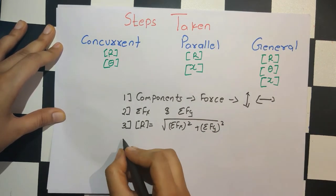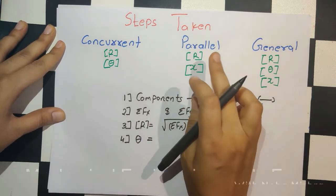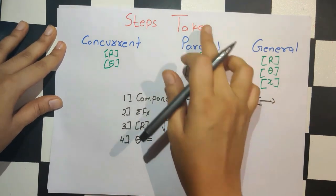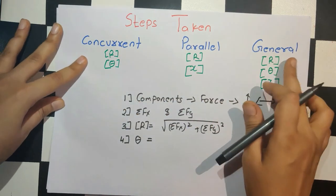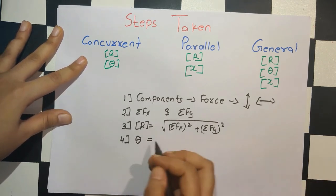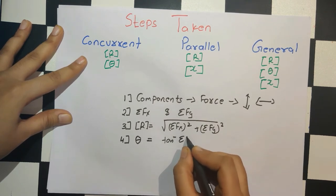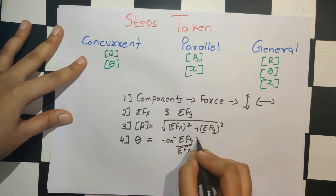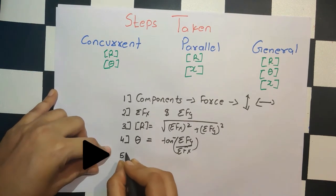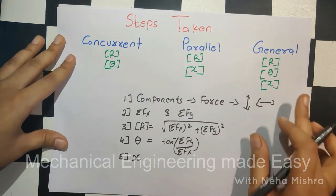Once you find the magnitude R, the next step is to find θ — but not for the parallel case, since we don't need θ there. For concurrent and general types, we follow this fourth step as well, applying the formula θ = tan⁻¹(ΣFy / ΣFx). The last parameter to find is x, required for parallel and general force systems.